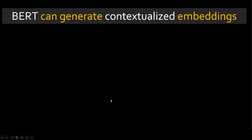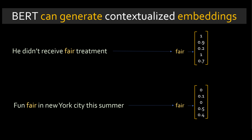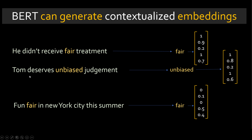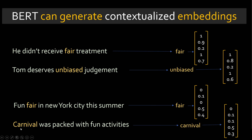BERT allows you to do exactly that — it generates contextualized embeddings. When you have two sentences with the word 'fair,' BERT will generate different embeddings for each context. At the same time, when you have a statement like 'Tom deserves unbiased judgment,' the words 'unbiased' and 'fair' will produce similar vectors. And when you have 'the carnival was packed with fun activities,' 'carnival' and 'fair' will also produce similar embeddings. BERT is very powerful — it looks at the context and generates a meaningful number representation for a given word.